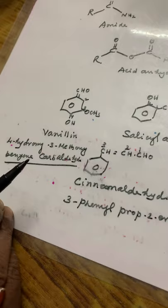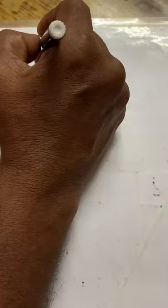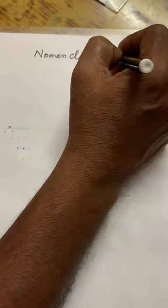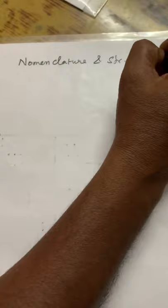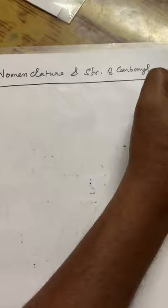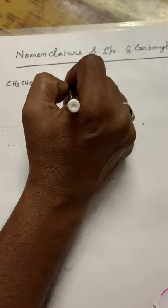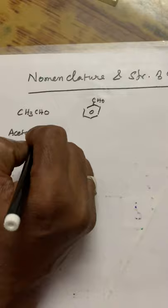Next, we are going to see the nomenclature and structure of the carbonyl group. You take aldehyde examples: CH3CHO — this is acetaldehyde. Benzene ring with CHO — this is benzaldehyde.